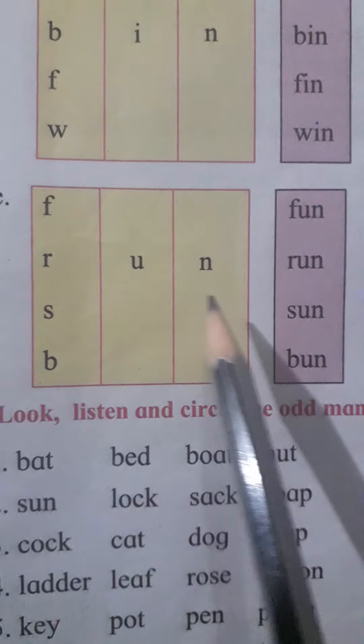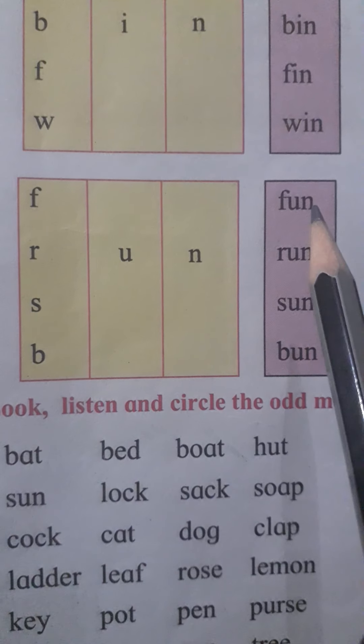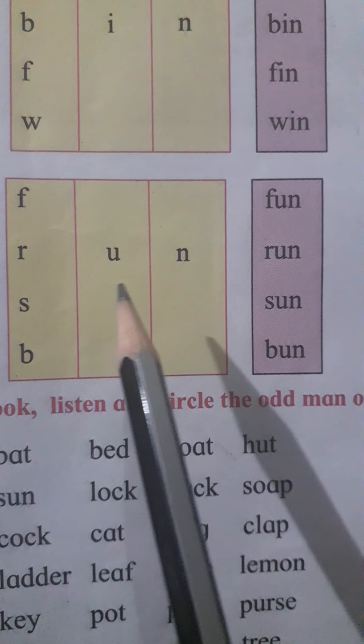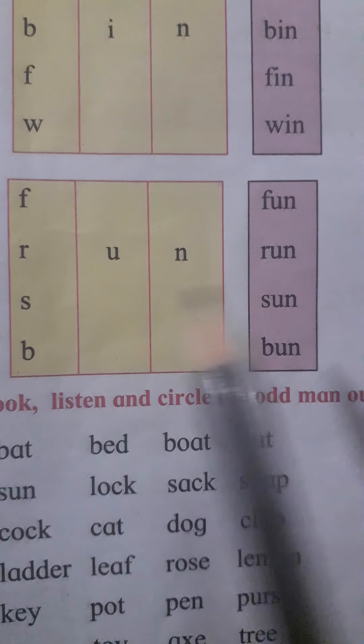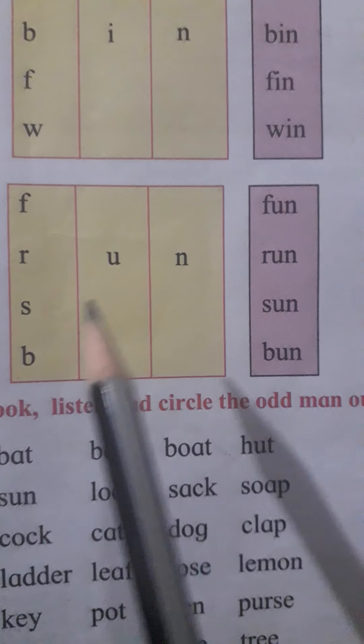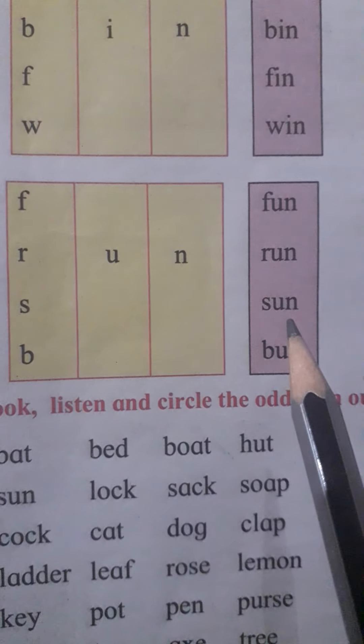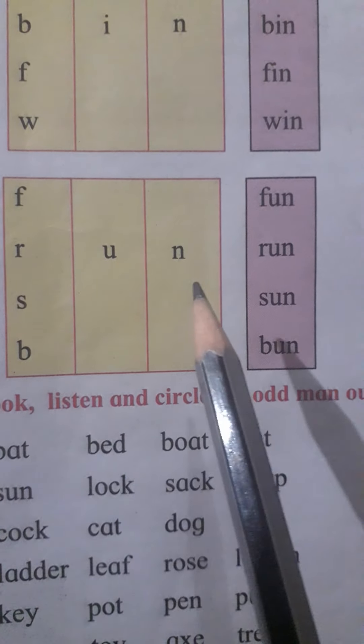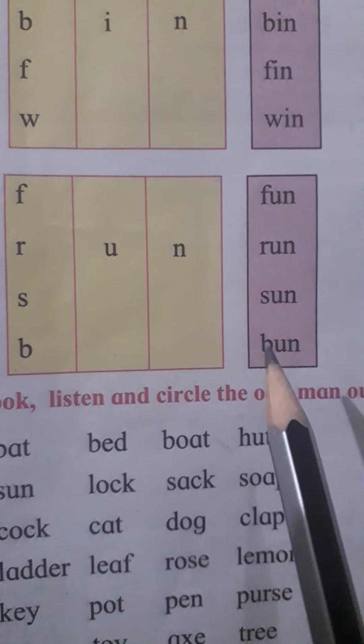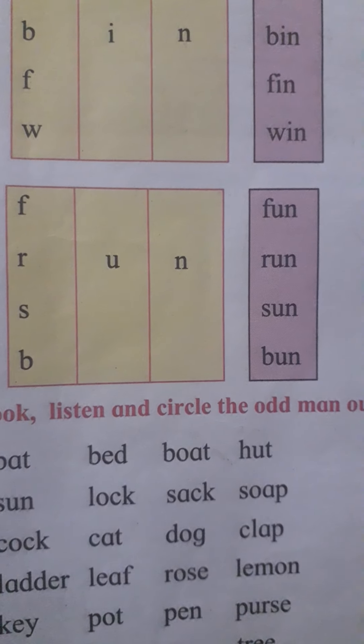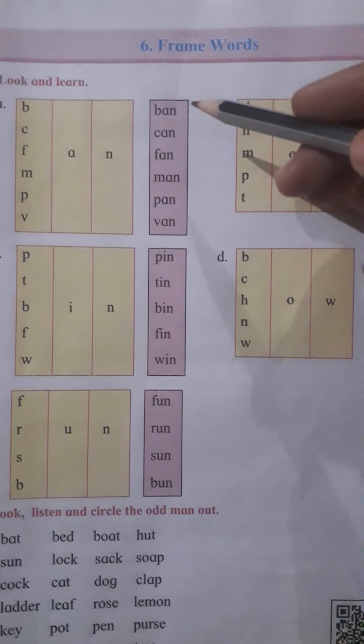F-U-N fun, R-U-N run, S-U-N sun, B-U-N bun. We can say these are all rhyming words. These words rhyme with each other.